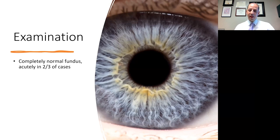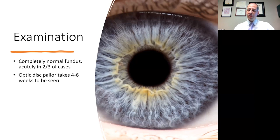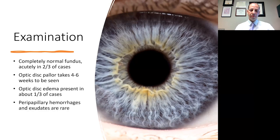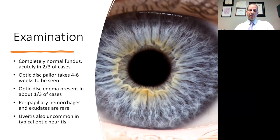What about the fundoscopic examination? In acute optic neuritis, it is completely normal in about two-thirds of cases. Optic disc pallor is typically a feature but not acutely — it takes about four to six weeks for pallor to first be noticed. Optic disc edema is present in about one-third of cases acutely. Peripapillary hemorrhages and exudates are very uncommon and should make you think about an alternative diagnosis if you see them. Uveitis is also uncommon in typical optic neuritis.